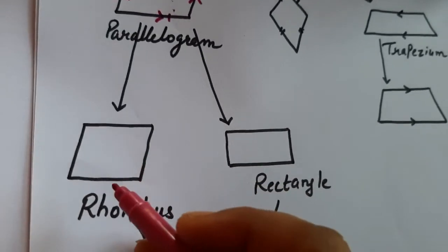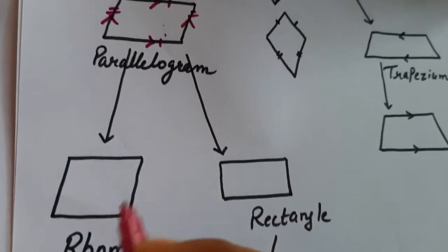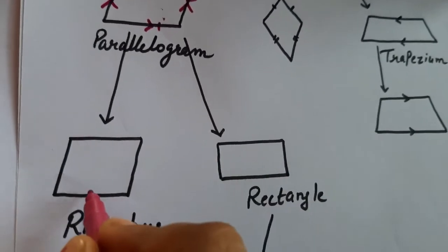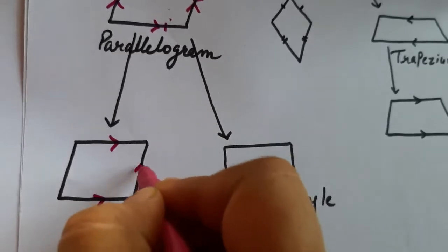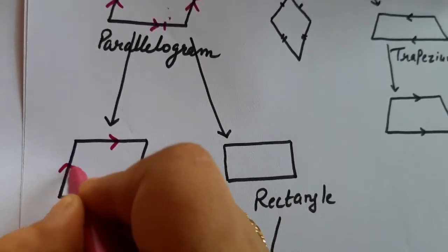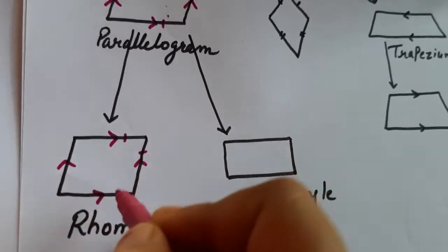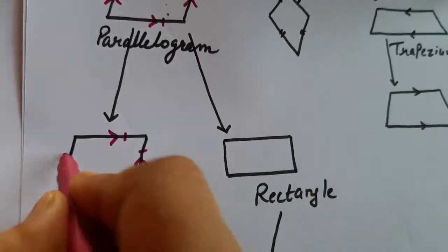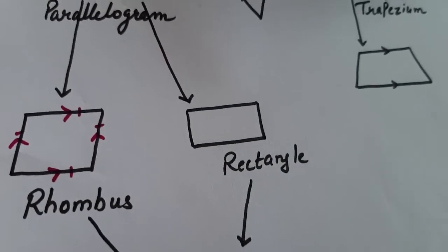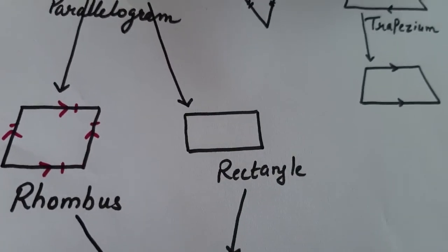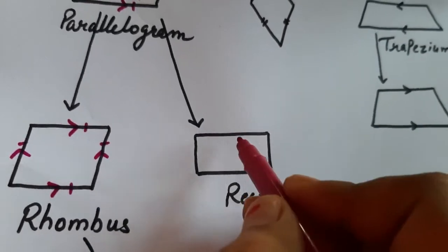In a parallelogram, we have special cases. The first is the rhombus. A rhombus has all the sides parallel and all the sides are equal. So in a rhombus, all sides are parallel and equal.